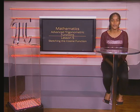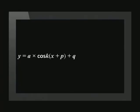Let's start by looking at the formula for a cosine function. In the formula y equals a times cos k, empty brackets, x plus p plus q, a vertically compresses or stretches the graph, and the value of k horizontally compresses or stretches the graph. p shifts the function horizontally, and q shifts the function vertically.